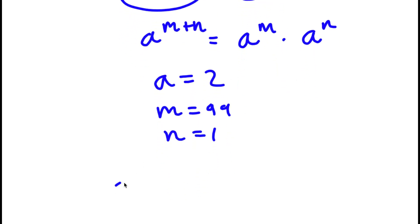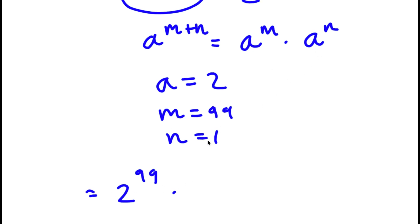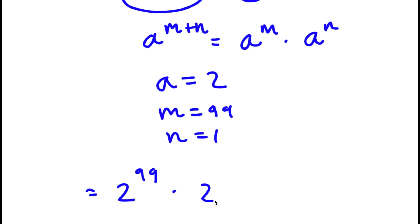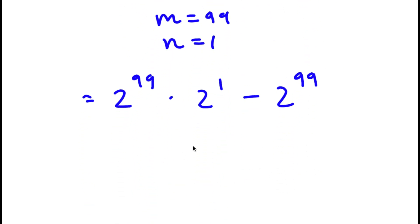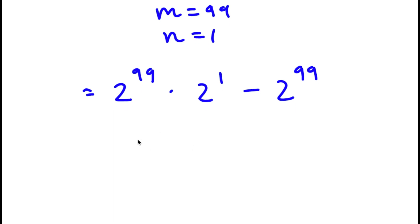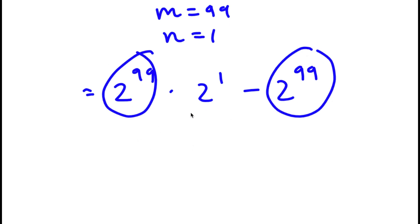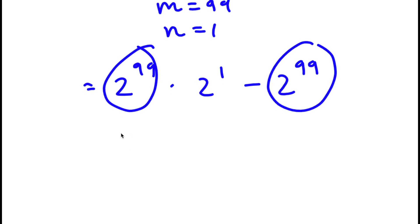So a is 2, so I have 2 to the power of 99 times 2 to the power of 1. Now I have this minus 2 to the power of 99. As you can see, both terms have 2 to the power of 99 in them, so I'm going to simply factor out 2 to the power of 99.